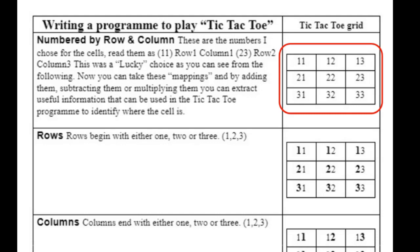This is tic-tac-toe from Nifty Access. Shown here in the red rectangle is the tic-tac-toe grid, and you can see the cells in the grid are numbered 11, 12, 13, 21, 22, 23, and 31, 32, 33. You might think that's odd numbering, but actually it means something specific.